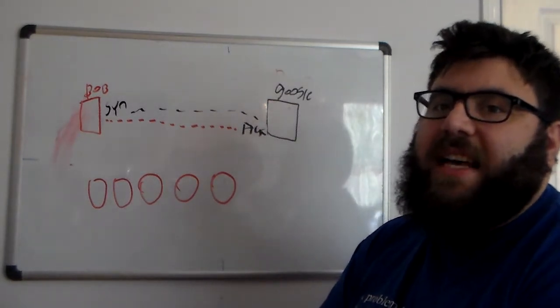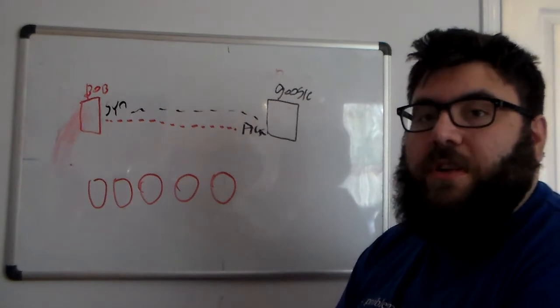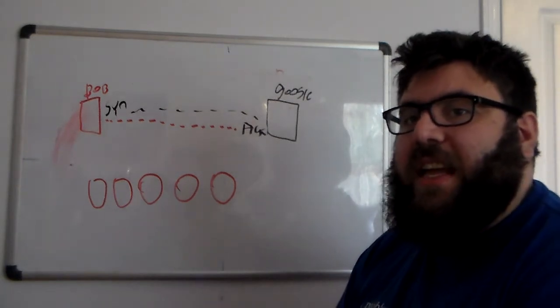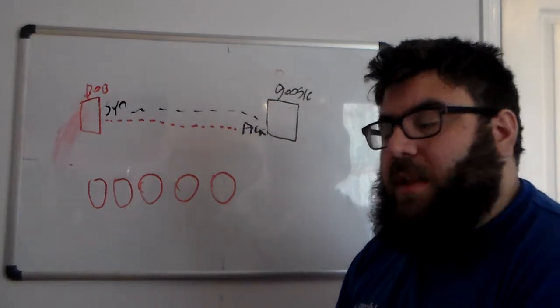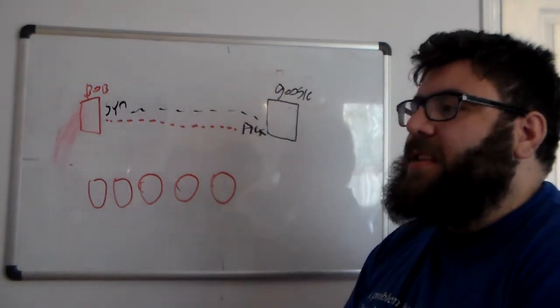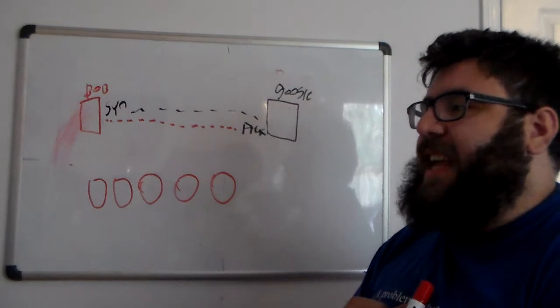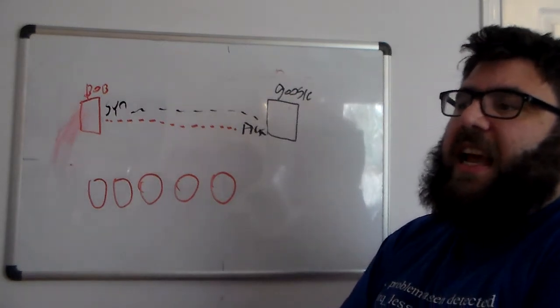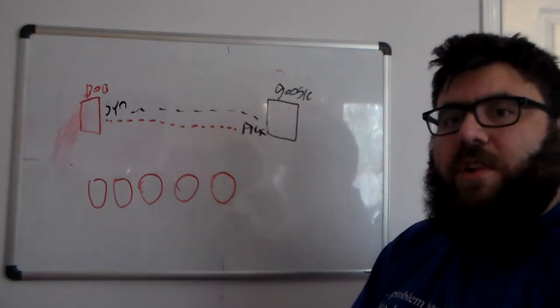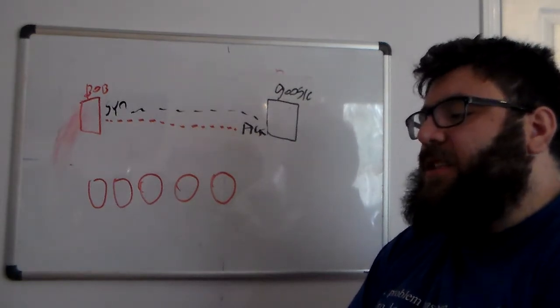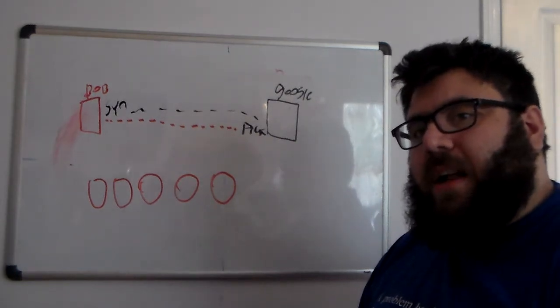This is why SIN attacks can be known as trickle attacks. They don't necessarily use a huge amount of bandwidth. But what they'll do is send like 10,000 packets per second. And sometimes that could be enough on a lower performing server to take up a lot of memory.